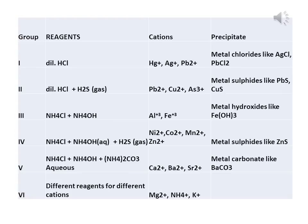For Group 4, use a mixture of ammonium chloride and ammonium hydroxide; pass H₂S gas through this aqueous solution and then add it to the salt solution. Metal ions get precipitated as metal sulfides. Group 4 cations are Ni²⁺, Co²⁺, Mn²⁺, and Zn²⁺. If you get a precipitate, one of these ions is present. If Group 4 is absent, proceed to Group 5.